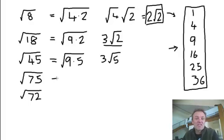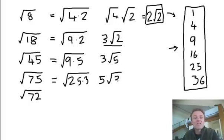So 75, 75 is 25 times 3. So I can square root the 25, it's 5. That's the thing I'm bringing outside, leaving a 3 inside.